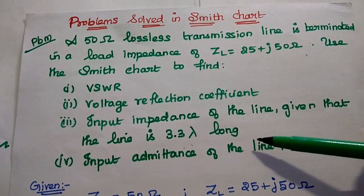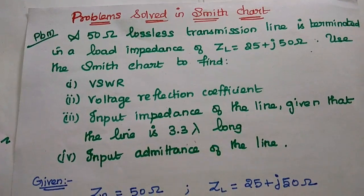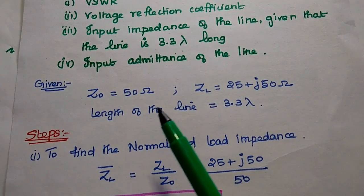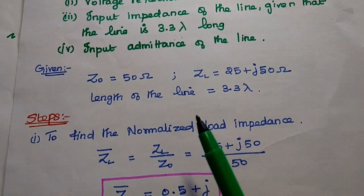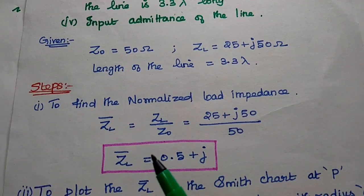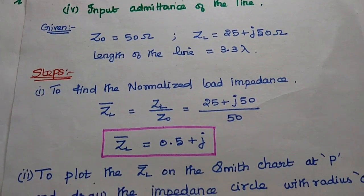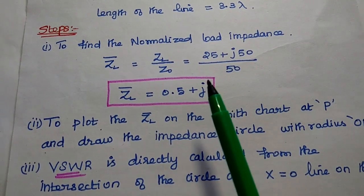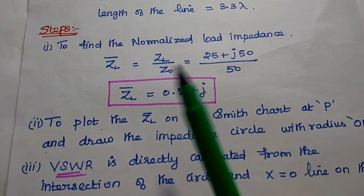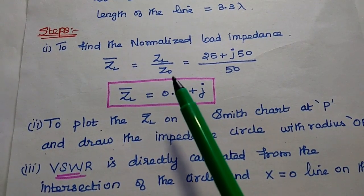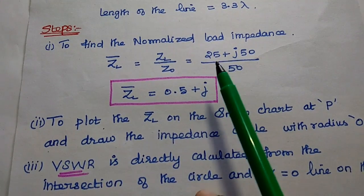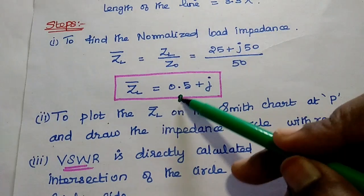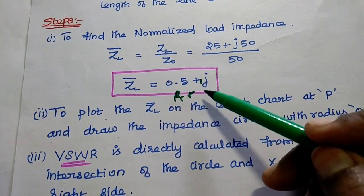We are going to find out all these parameters from the given data using the Smith chart. First we write the given data: the lossless transmission line has characteristic impedance 50 ohm, the load impedance is 25 plus j50 ohm, and the length of the line is 3.3 lambda. The first step is to find the normalized load impedance by dividing the load impedance by the characteristic impedance. So we get 25 plus j50 divided by 50, which gives 0.5 plus j1.